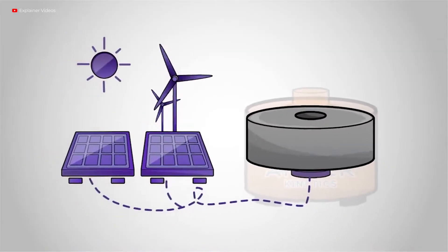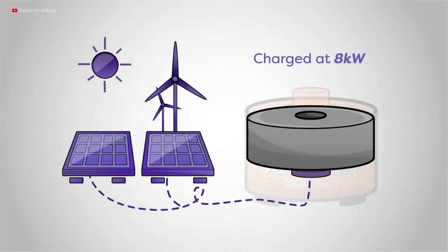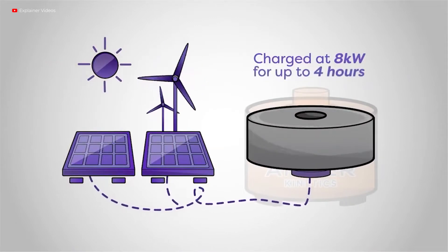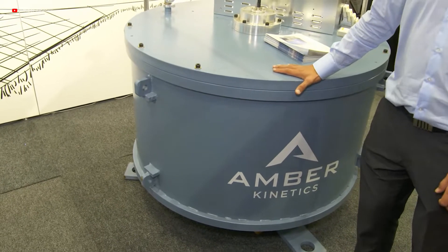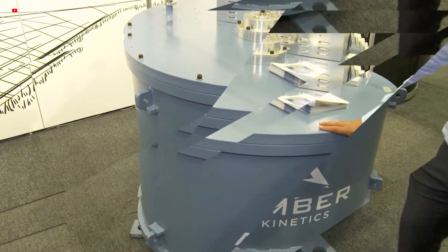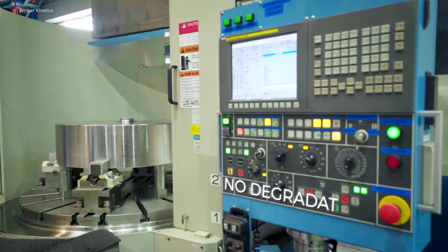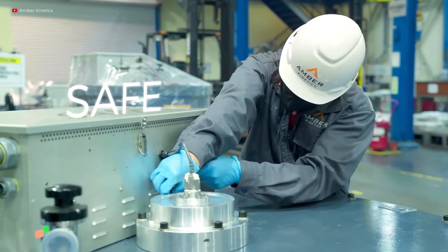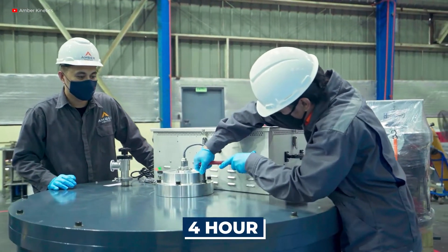Most notably, Amber Kinetics has increased the efficiency and duration of flywheels from minutes to hours, resulting in safe, cost-effective, and dependable energy storage. The Amber Kinetics M32 is the first commercialized kinetic energy storage system with a four-hour discharge period.